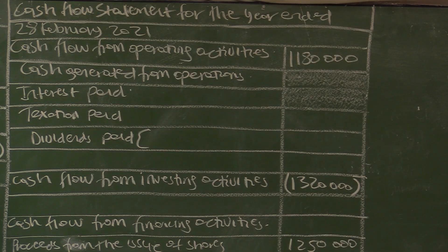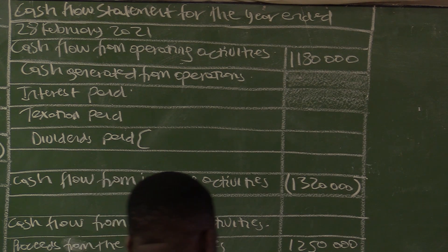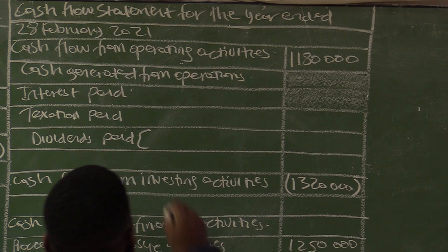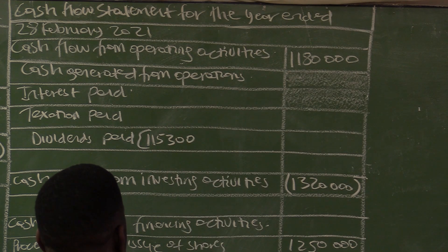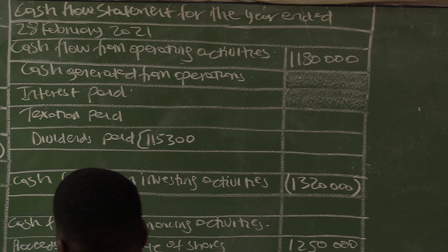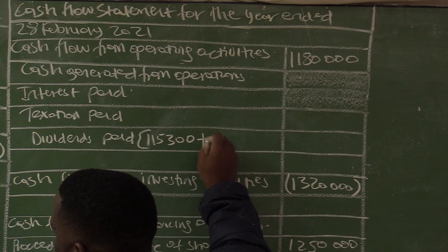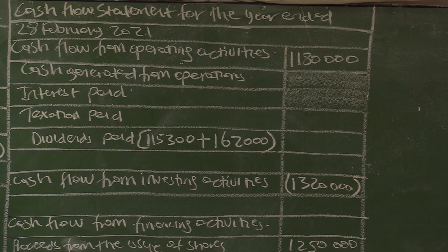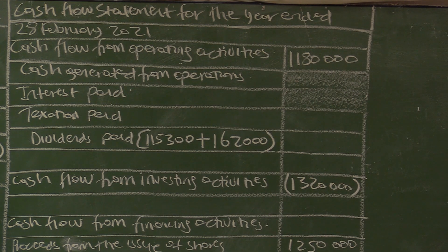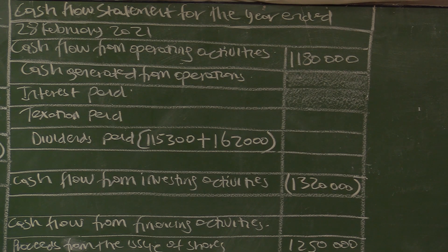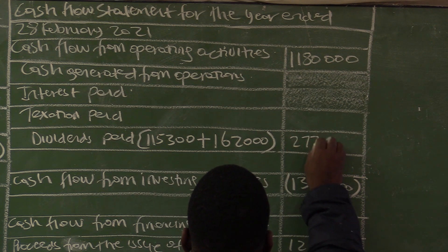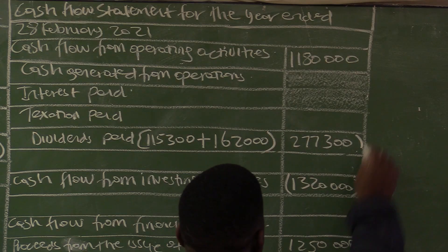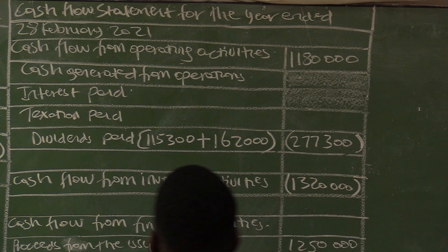For dividends paid, you need shareholders for dividends at the beginning plus your interim dividend. Shareholders for dividends at the beginning is $115,300 — this is what you pay every year; you must start by paying the amount owing at the beginning. Then the interim dividend is $162,000. The final dividend is declared in the current year and paid in the following year, so dividends paid equals $115,300 plus $162,000 equals $277,300 (in brackets).